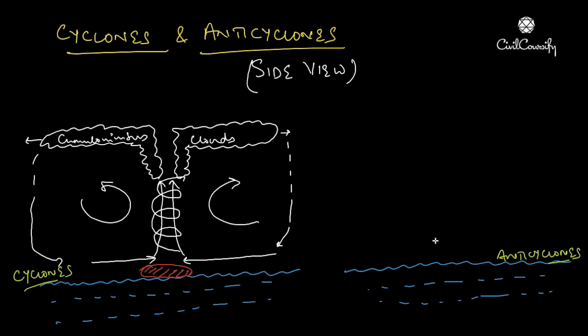If we look at anticyclones, at the center there's high pressure as we've already seen in the top view. Since winds move away from high pressure, they would diverge away from the high pressure. For divergence to occur from this high pressure, wind would subside from a higher altitude. Due to this subsidence, it would diverge in different directions.